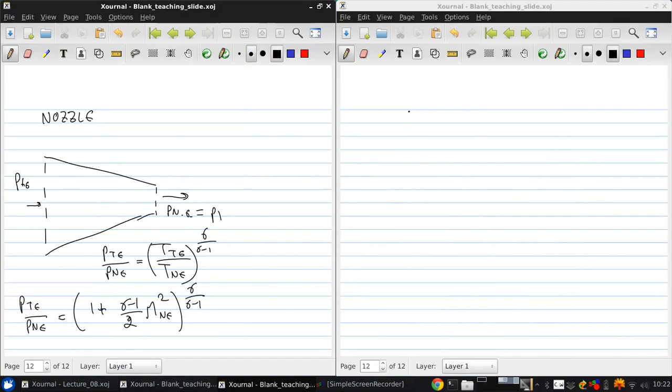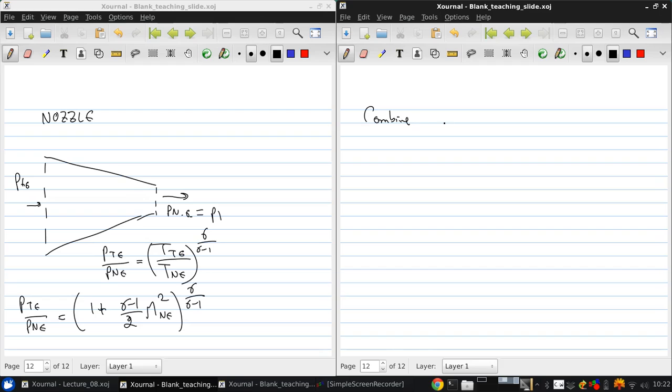And then when you combine the nozzle exit Mach number with temperature at the nozzle exit, it's possible to get the nozzle exit velocity, where the temperature at the nozzle exit is a function of the temperature at turbine exit and the Mach number at nozzle exit.